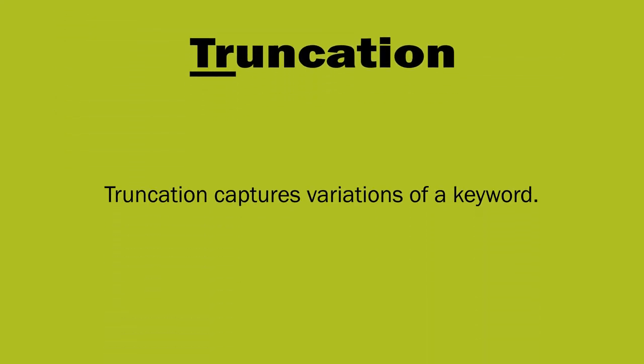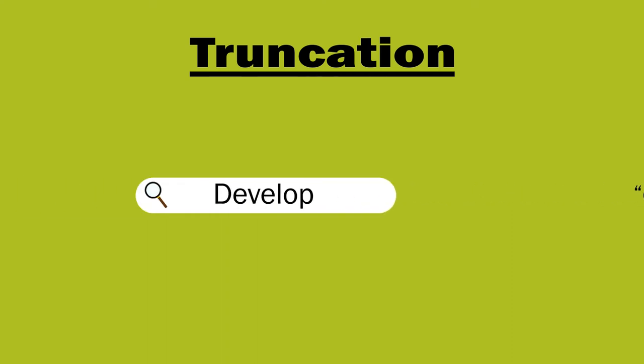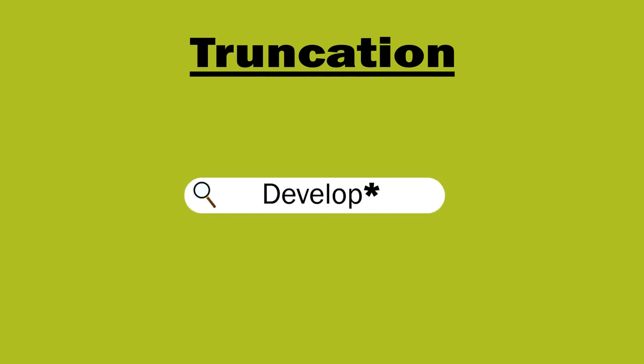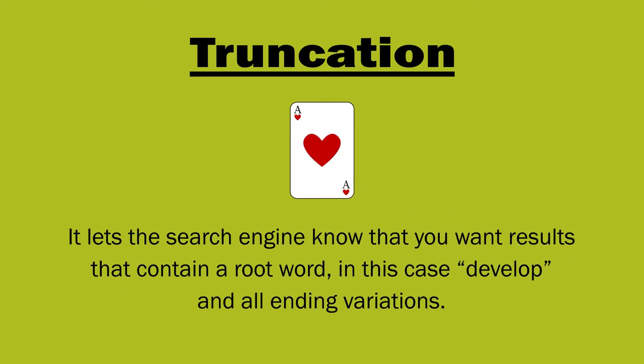Finally, consider using truncation. Truncation captures variations of a keyword. Say you want results containing development, developer, and developing. Instead of typing each word and connecting them with OR, you can simply use develop followed by an asterisk. The asterisk, also known as a wildcard, lets the search engine know you want results containing the root word — in this case develop — and all its ending variations.